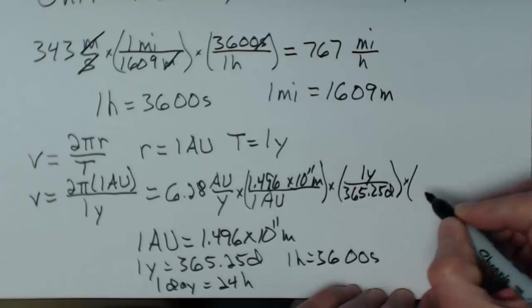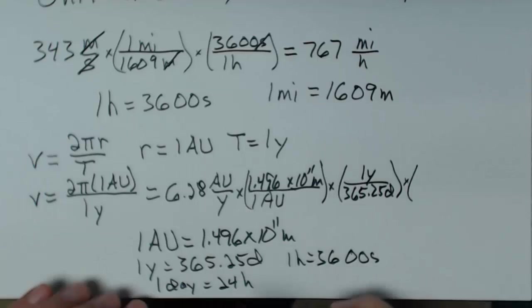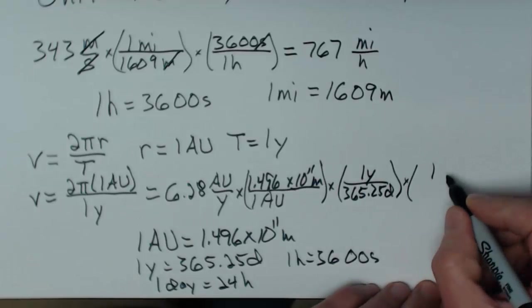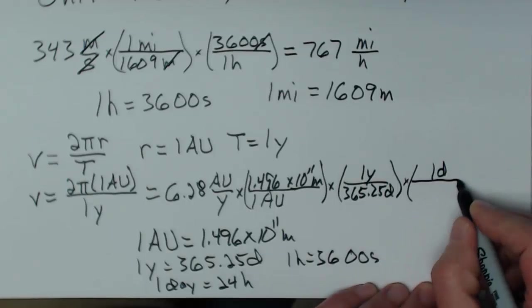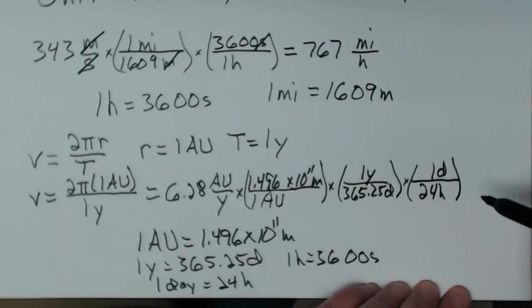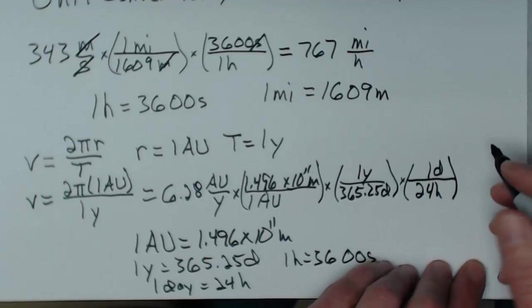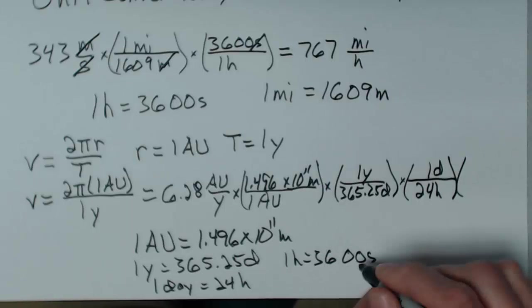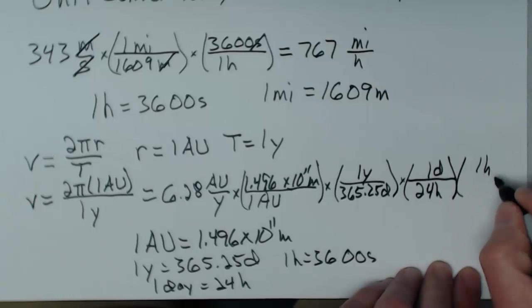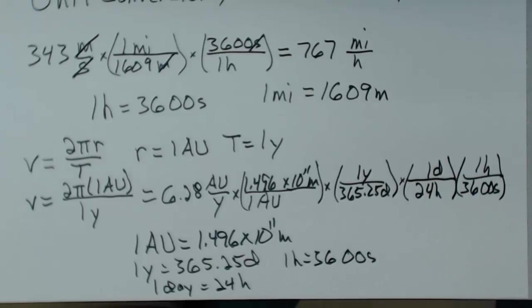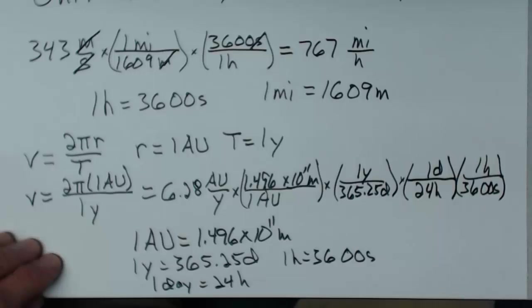So I put in here, I've got that 1 day is equal to 24 hours. I've got days on the bottom. So if I put 1 day up here, and I'll just use D for day, over 24 hours, I'm getting there. Now, days would divide out. I've got hours here. I want to get rid of those and get to seconds. If I put 1 hour on top and 3600 seconds on the bottom. 1 hour, 3600 seconds on the bottom. Now I'm going to go through and cross out everything that divides out.